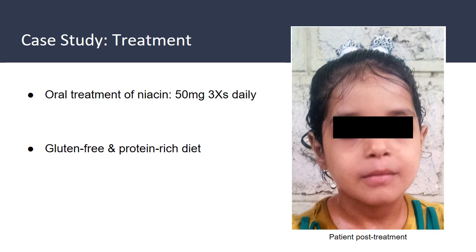After this comprehensive workup, our patient was diagnosed with Hartnup disease caused by a niacin deficiency, so she was treated with niacin 50 milligrams three times a day. She was also prescribed a gluten-free and protein-rich diet in order to get her weight gain up, and as you can see, the photo on the right shows our patient post-treatment — she looks much healthier.